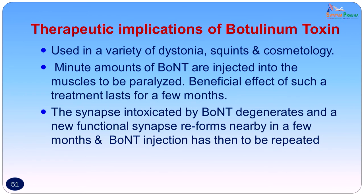Botulinum toxin is not all bad — there are various therapeutic implications. It has been used in a variety of muscle dystonias, in treatment of strabismus or squints, and in cosmetology. Minute amounts are injected into the muscle to be paralyzed. The beneficial effect lasts only a few months, as the intoxicated synapse degenerates and a new functional synapse reforms in a few months, requiring re-injection.